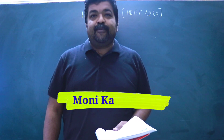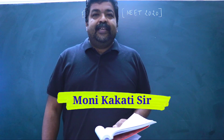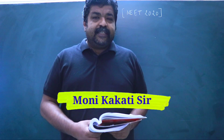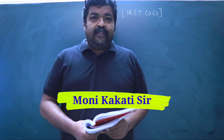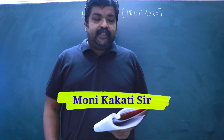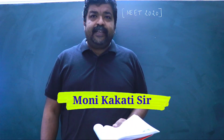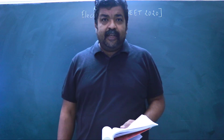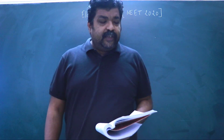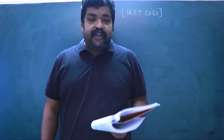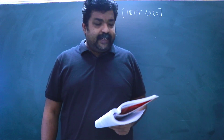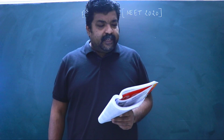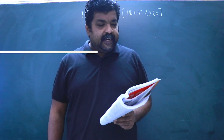Hi everyone, welcome to my channel. In today's video we are going to discuss a few questions from the chapter electrostatics which have come in NEET. The first question is from NEET 2019: a hollow metal sphere of radius R is uniformly charged.